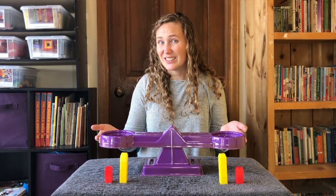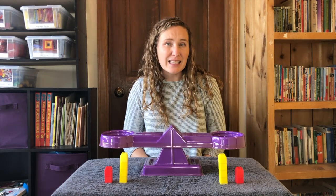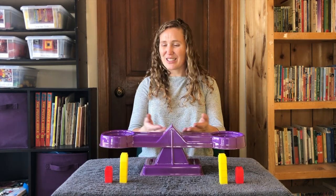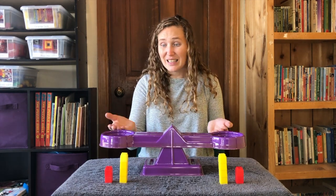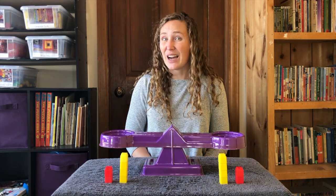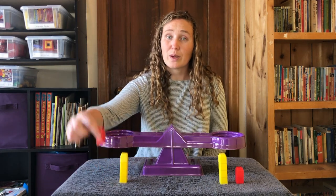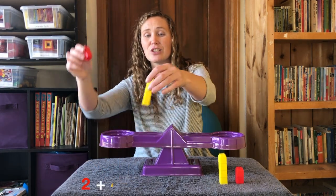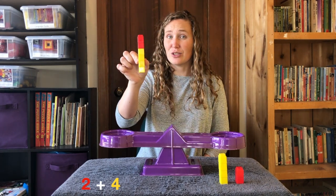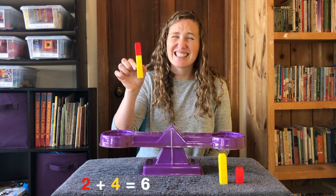This is my scale. Right now, it's balanced. That means that the weight in each side is equal. Right now, there's nothing in either side. Nothing and nothing is equal, is the same. Now, let's do some adding. Let's start with two red blocks and add it to four yellow blocks. Two plus four equals six.